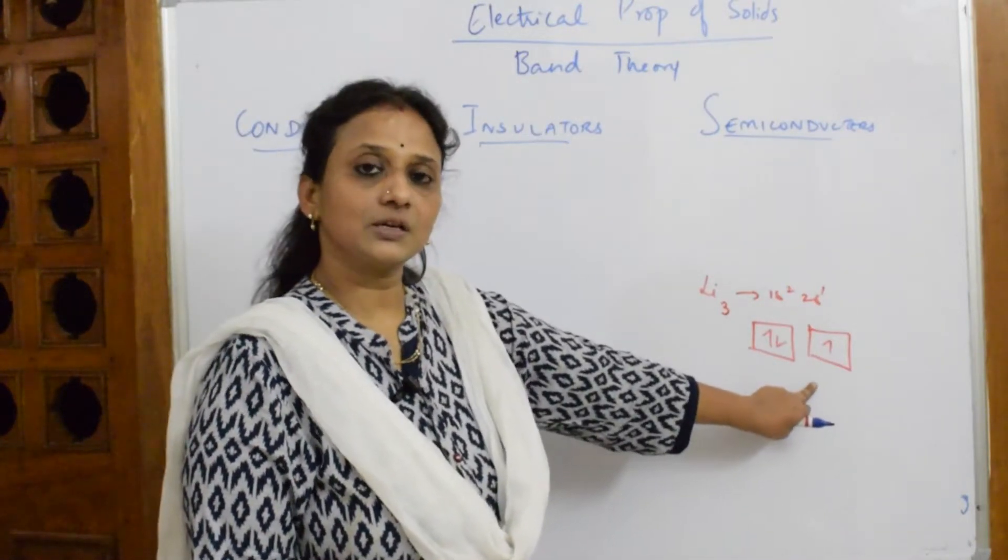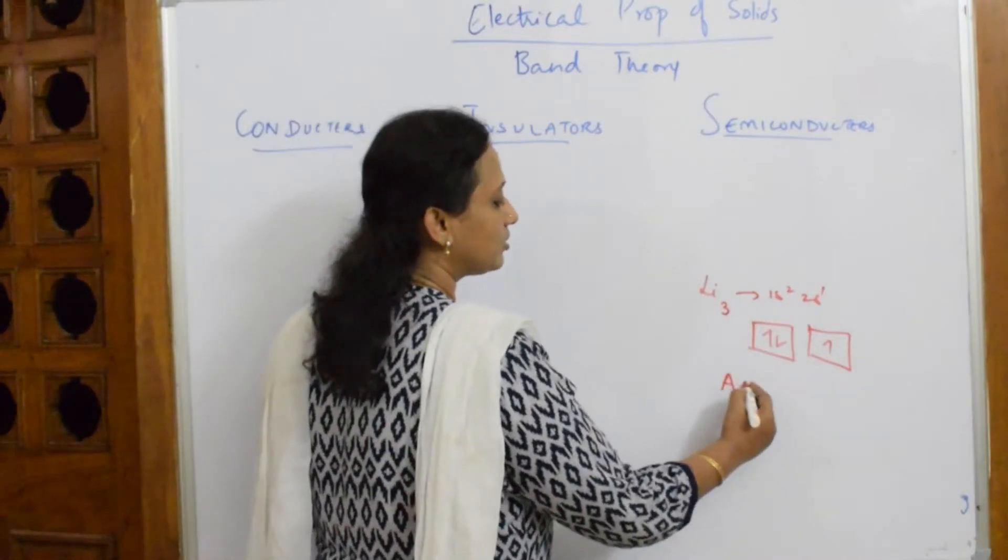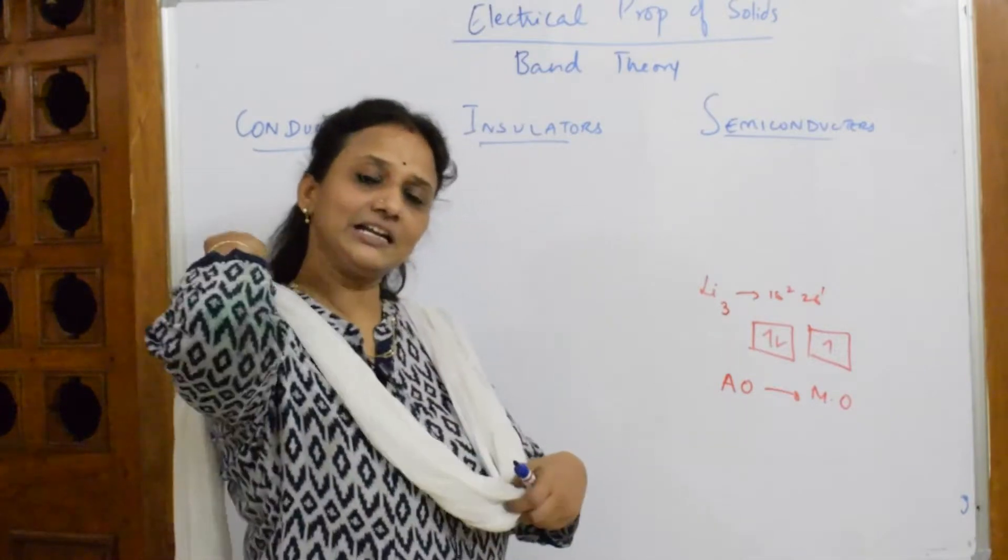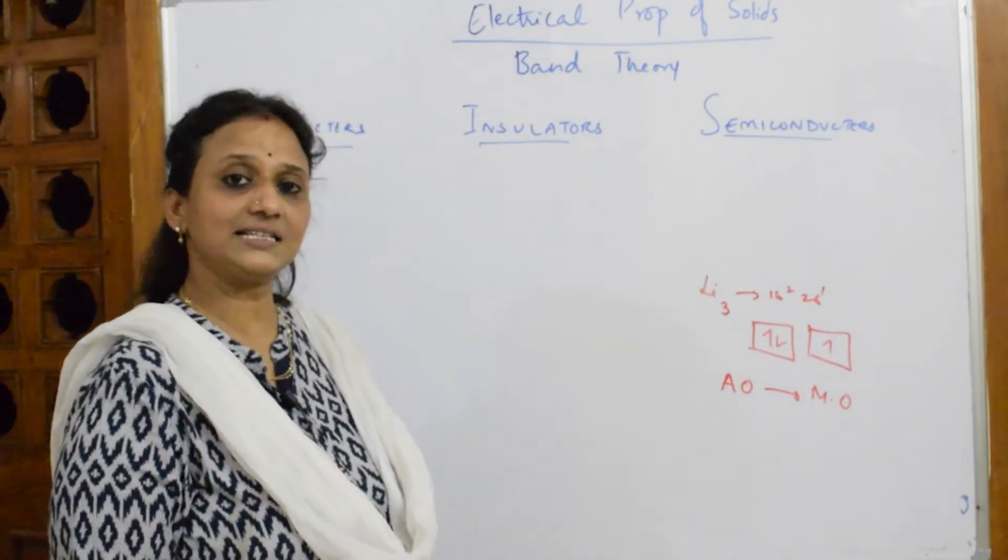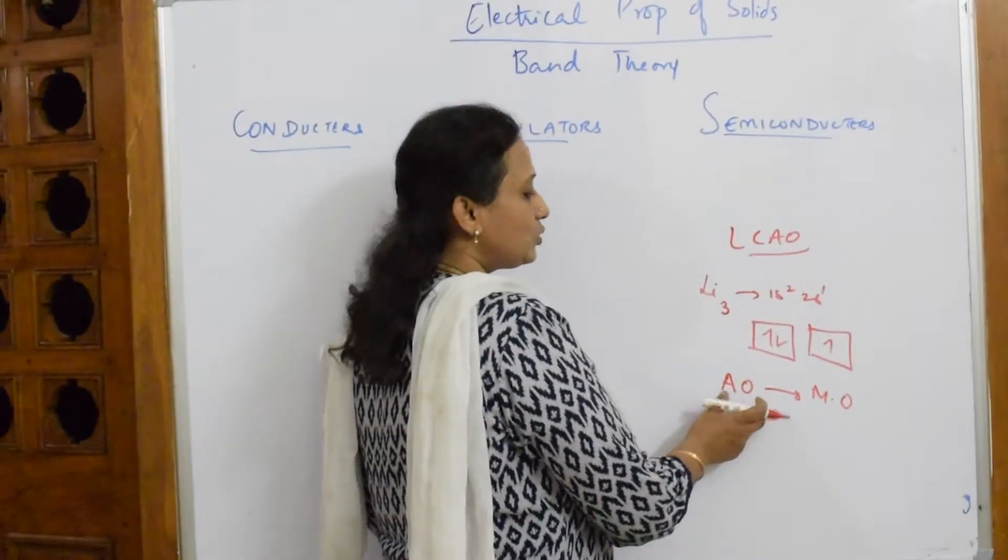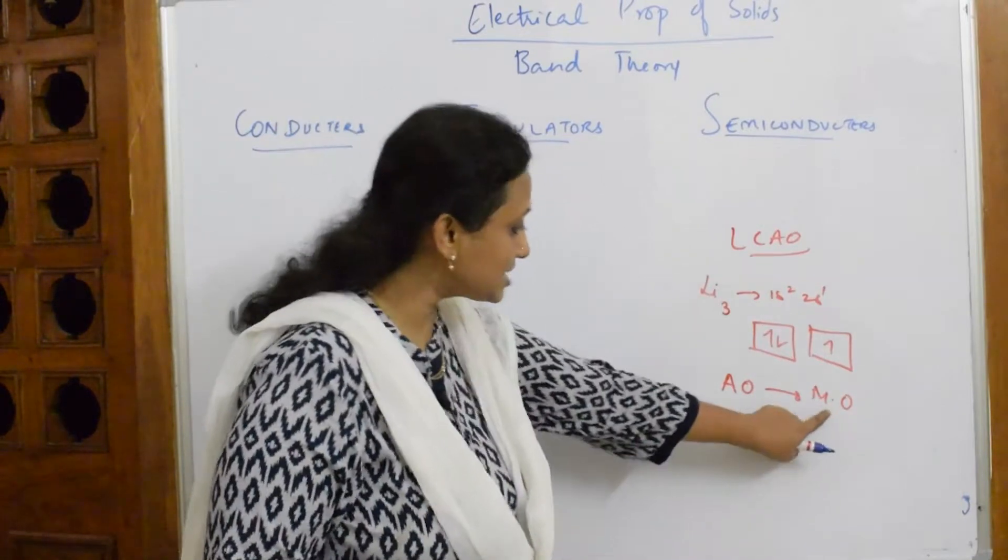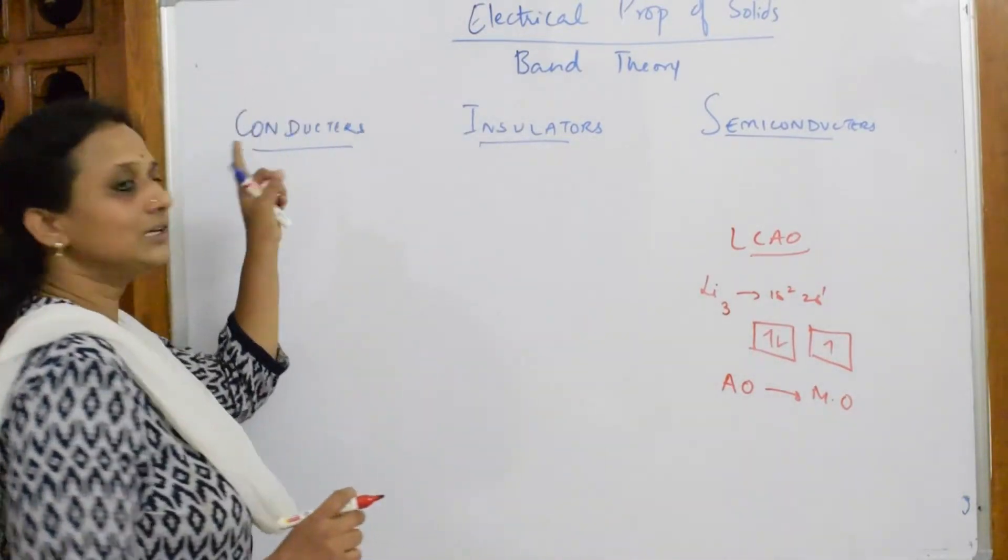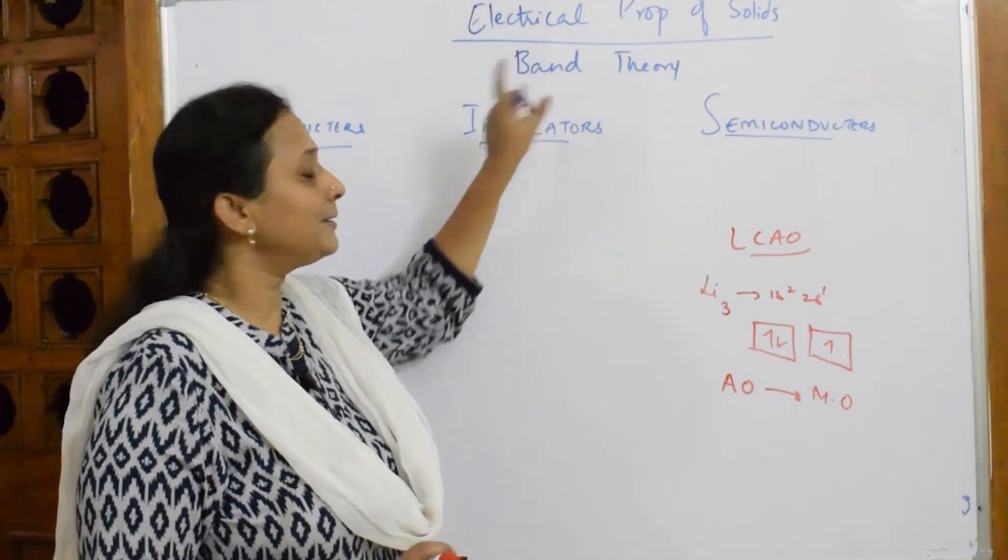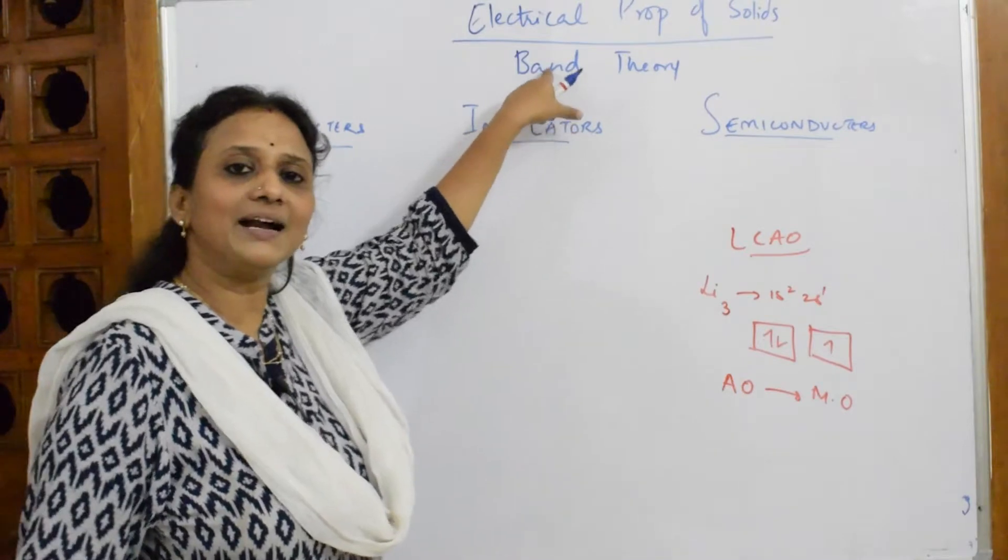Atomic orbitals, when they intermix together, they form molecular orbitals. You have studied, right? Linear combination of atomic orbitals, LCAO theory in grade 11. So, according to LCAO theory, when two atomic orbitals intermixed with each other, they form molecular orbitals. This molecular orbital is your band. Remember that. So, this molecular orbital is your band. With that band, I am going to explain you the band theory.